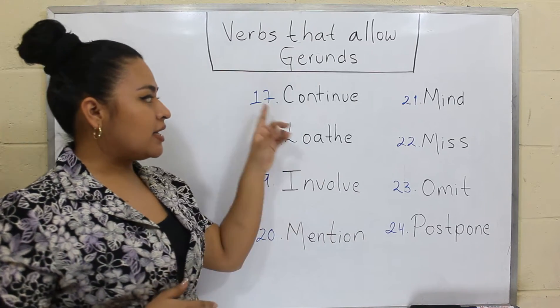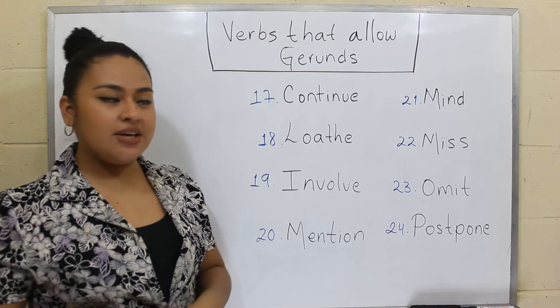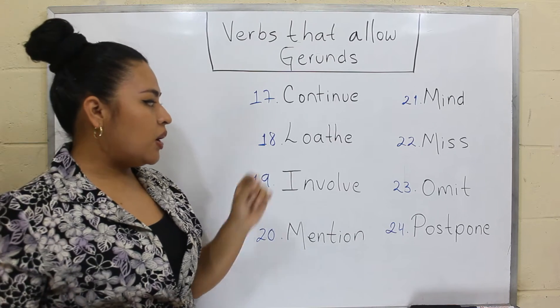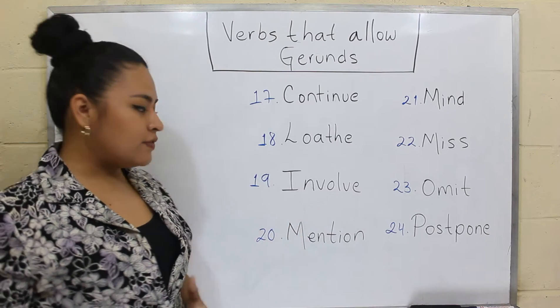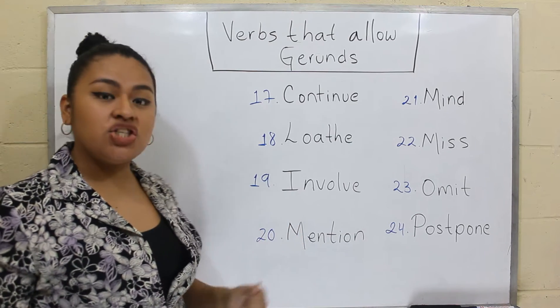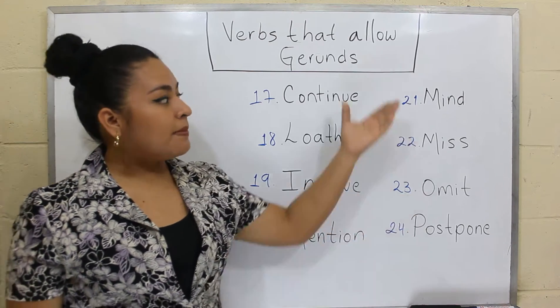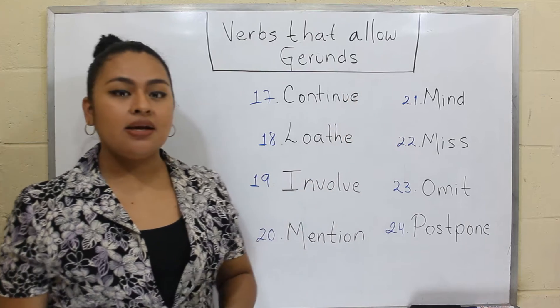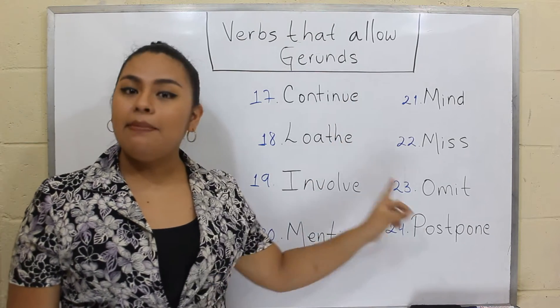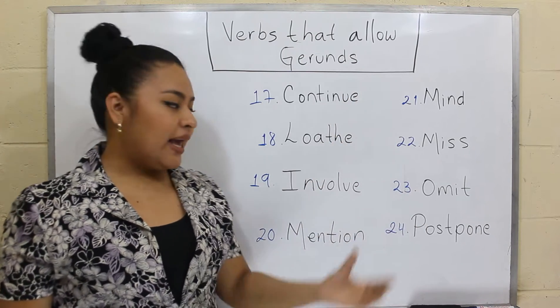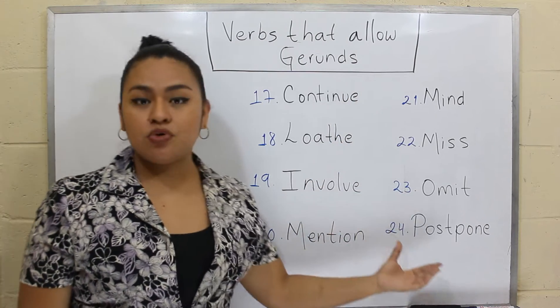In the third group, we have verbs like continue, loathe, involve, mention, mind, miss, omit, and postpone.